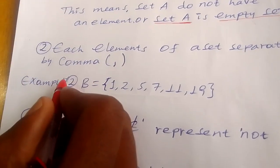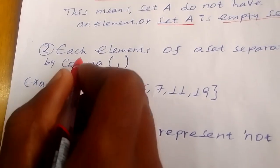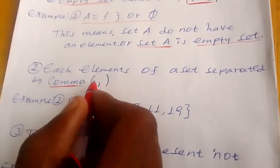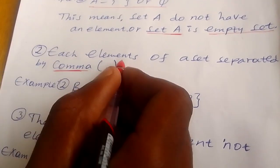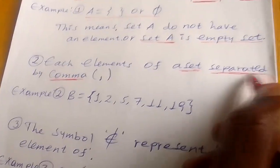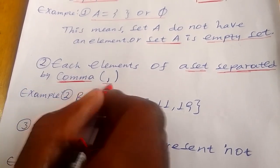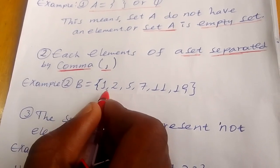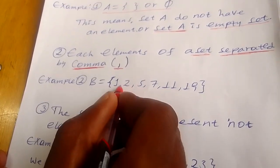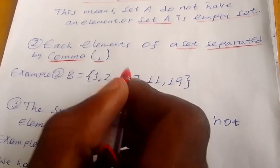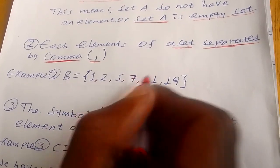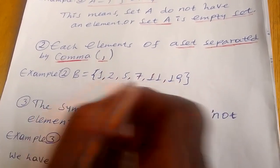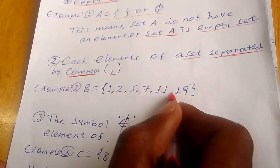The second note is: each element of a set is separated by a comma. Don't forget, students. For example, set B is equal to the set containing 1, 2, 5, 7, 11, and 19. Don't forget — we separate those numbers using a comma.